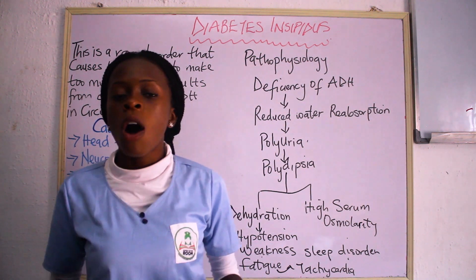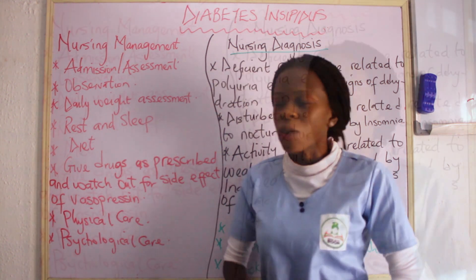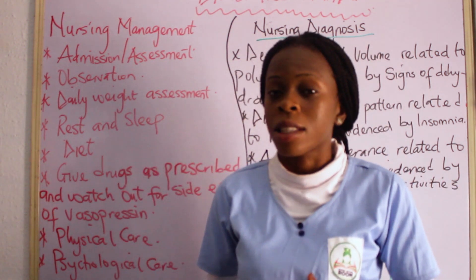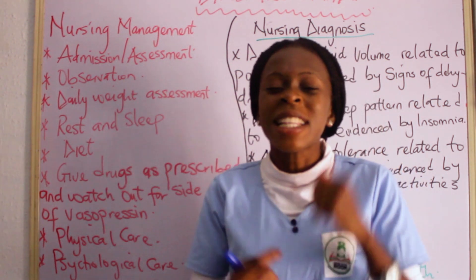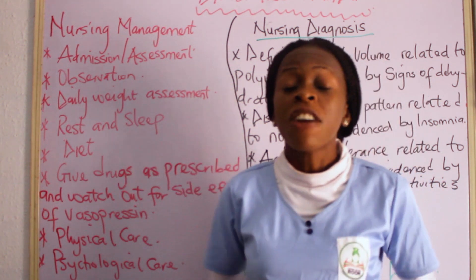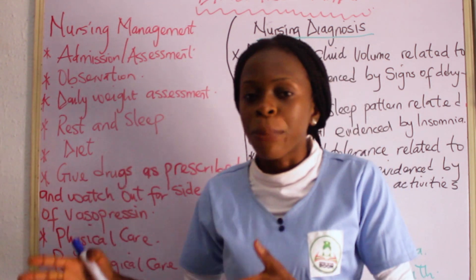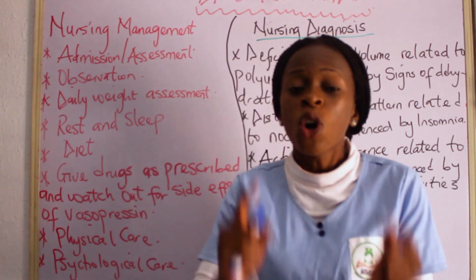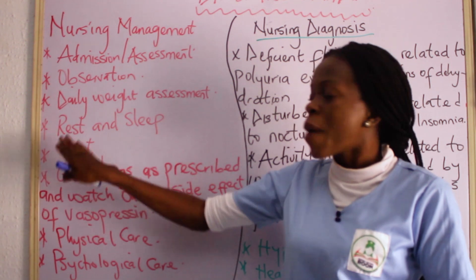In terms of nursing management for diabetes insipidus, the first thing to note is admission and assessment. You admit based on the severity of the case, but assessment is of paramount importance in nursing management. Then observation: you have to observe the vital signs of your patient and know whether they are normal or abnormal. Another is daily weight assessment — you have to weigh this patient daily. You also have to monitor the inputs and outputs of this patient, which is very important.